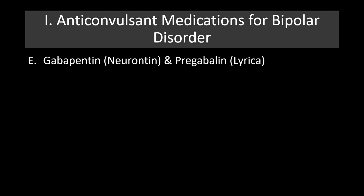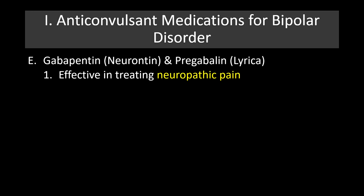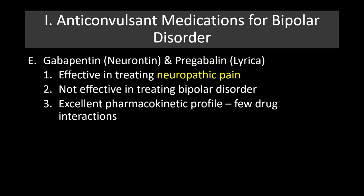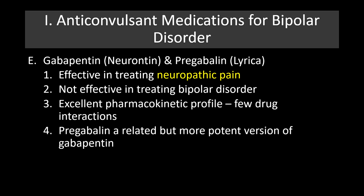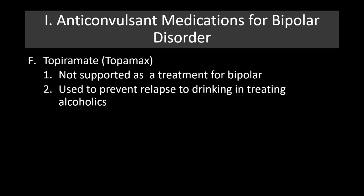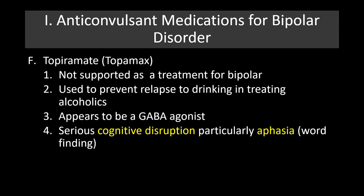Gabapentin and pregabalin (Lyrica) are both effective in treating neuropathic pain but are not particularly effective for bipolar disorder. They have good pharmacokinetic profiles and few drug interactions. Lyrica is a related but more potent version of gabapentin, making it more useful for peripheral neuropathy. Topamax is not supported as a treatment for bipolar disorder and is primarily used to prevent relapse to drinking in alcoholics. However, it can cause serious cognitive disruption, particularly aphasia — difficulty with word finding.